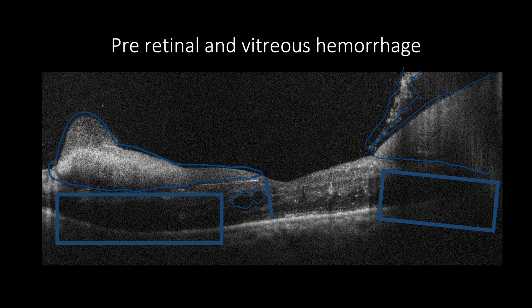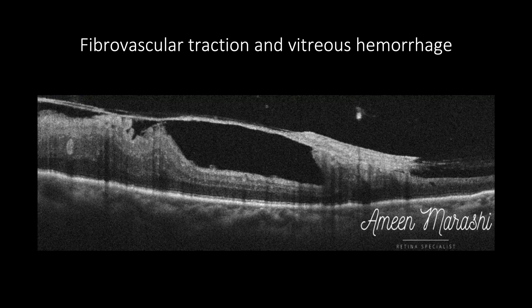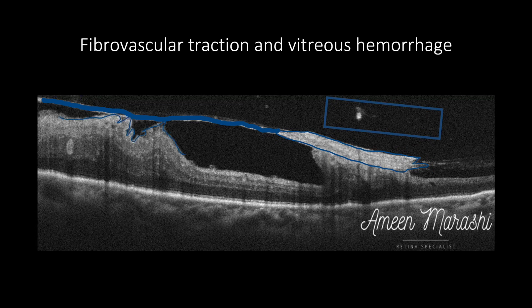OCT, on the other hand, can reveal the presence of fibrovascular proliferation, which appears hyperreflective anchored within the posterior cortical vitreous. OCT can reveal if it is associated with vitreous hemorrhage, epiretinal membrane, macular distortion, edema, or schisis. Thank you for listening. I hope you find this information useful in your daily clinical practice. Please stay tuned to the next presentation where I will discuss the clinical application of OCT in vascular and non-diabetic retinal diseases.